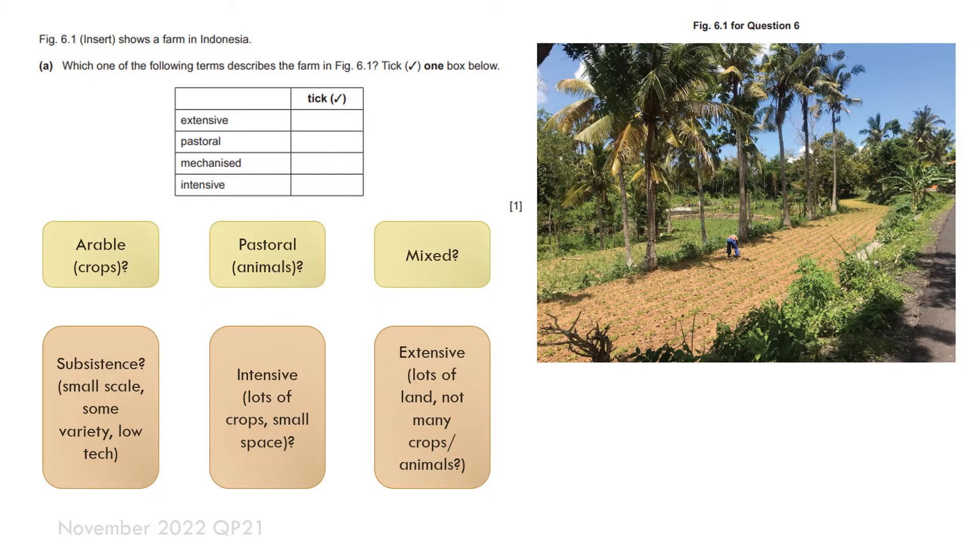If you look at the examples here you can tell that they're not asking you to identify arable, pastoral or mixed, but if they were we could say it's arable farming because we only see crops. Now is it subsistence intensive or extensive? Well for me it's intensive because there are lots of crops grown on a relatively small space. I'm going to tick intensive and that's what the mark is.